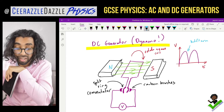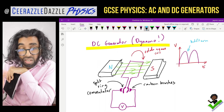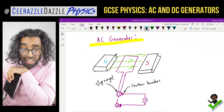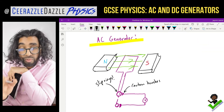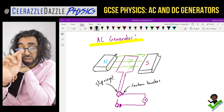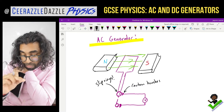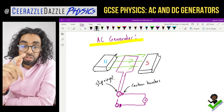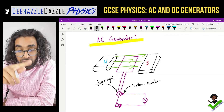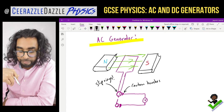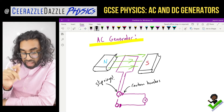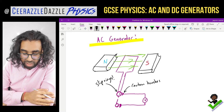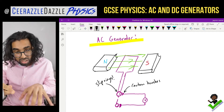That's the DC generator — sometimes called a dynamo. Now moving on to the AC generator. The AC generator looks slightly different: the split ring commutators have been removed and replaced with slip rings, which are continuous rings attached to the same point of the square coil. Each end of the square coil connects to one of the slip rings.